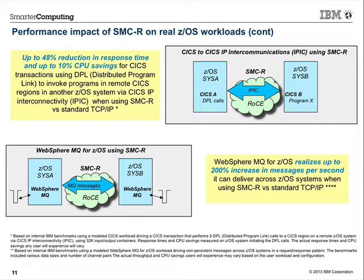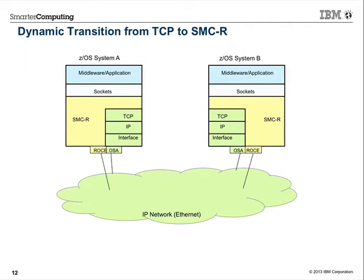The final example is MQ, which has flows between two different z/OS instances for queuing and responding to messages. We see the transaction rate increase by about 200% — a significant change for MQ messaging across two z/OS images compared to standard TCP/IP with Ethernet versus RoCE with SMCR. These are macro benchmarks using actual IBM middleware on System Z.